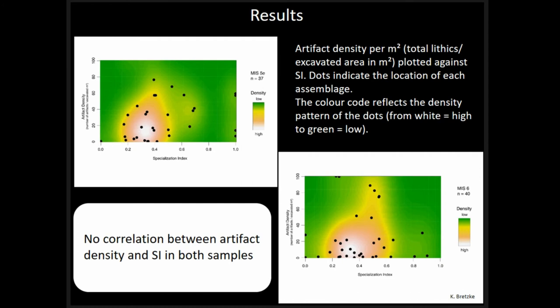As far as artifact density is concerned — calculated as total lithics per square meter, plotted on the y-axis against the specialization index on the x-axis — the color code reflects density from white (high) to green (low). Generally, there is no correlation between artifact density and specialization index in either the MIS-5E or MIS-6 sample.